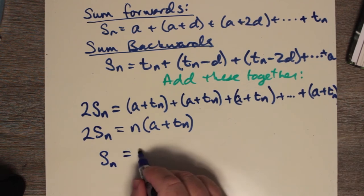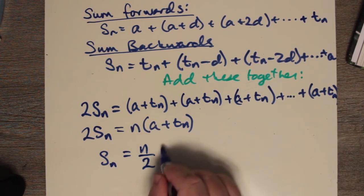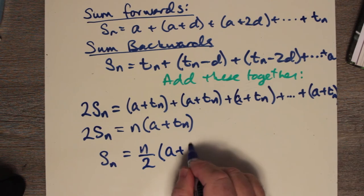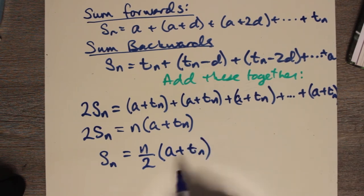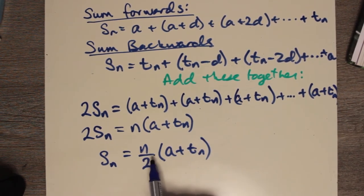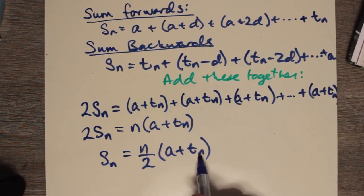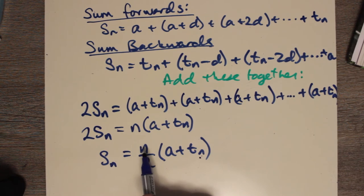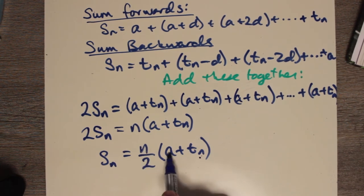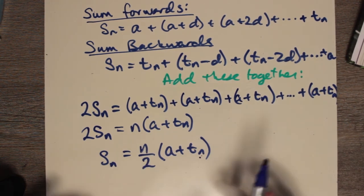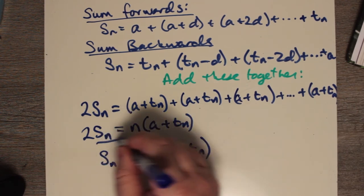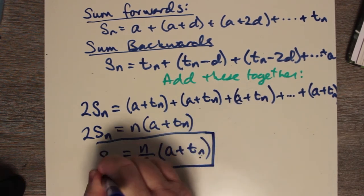What we need to know for the general formula of the arithmetic series is the last term in the series, the number of terms, and the first term. Those are three bits of information we need to know in order to find the sum using this equation.